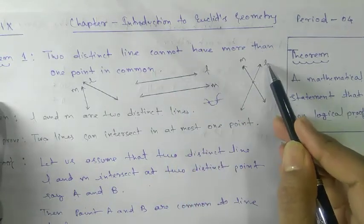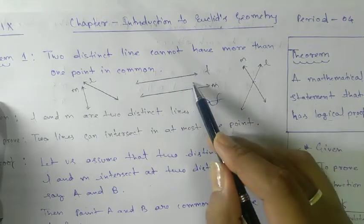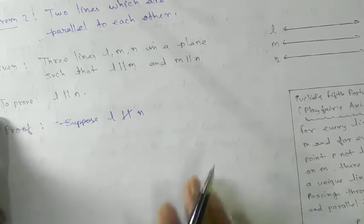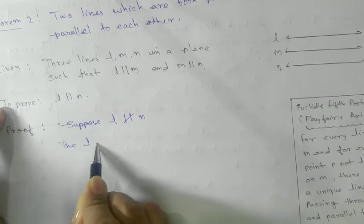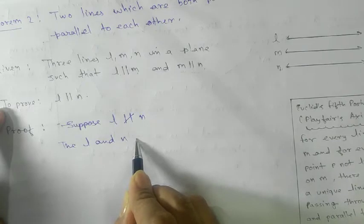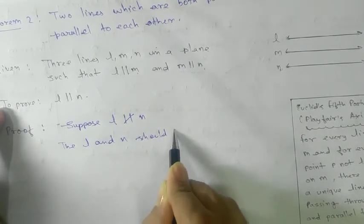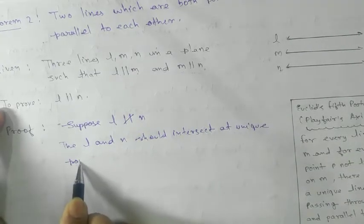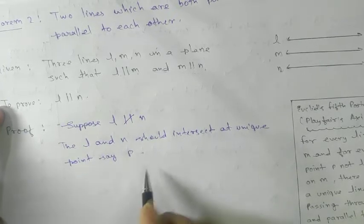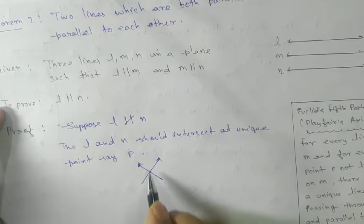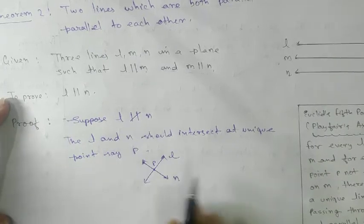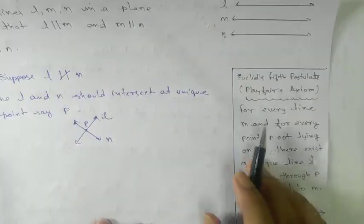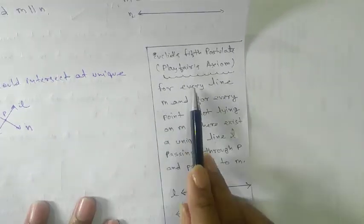From the previous theorem, if L is parallel to M you will not get any common point, but if L is not parallel to M you will get one common point. So if L is not parallel to N, then L and N must intersect at a unique point, say P.